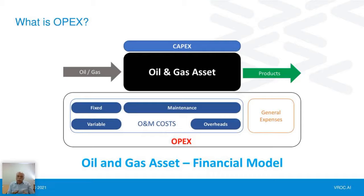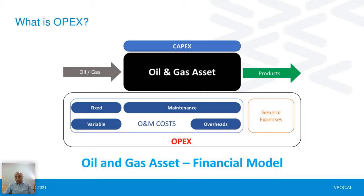Let's make sure we all understand what we're talking about when we talk about OPEX. Typically OPEX is shown in the lower half of the model. It includes maintenance — which is what most of us mean when we talk about reducing OPEX — but there are also fixed and variable costs and overheads to consider. These are all linked together, and there are general expenses incurred by the organization to just keep things going. All of this is part of the oil and gas financial model.